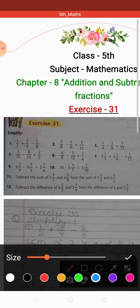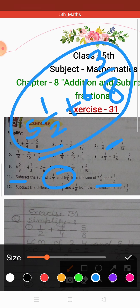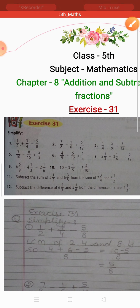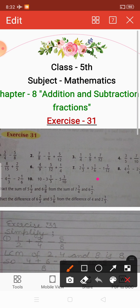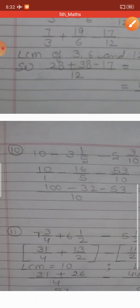Subtract the sum of five and one upon two and six and three upon eight from the sum of seven and three upon four and six and one upon two. Here you have to remember: subtract the sum of these two, meaning five and one half plus six and three eighths. The answer from this, you have to subtract. From what? From the sum of seven and three fourths and six and one half. So from these two's sum, you have to subtract these two's sum. First we'll write this fraction when solving.